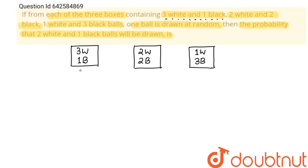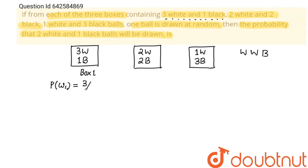One ball is drawn at random from each of the three boxes, so three balls will be drawn total — one from each box. What is the probability that two balls are white and one ball is black? From box one, the probability of drawing a white ball is 3/4, and the probability of drawing a black ball is 1/4.